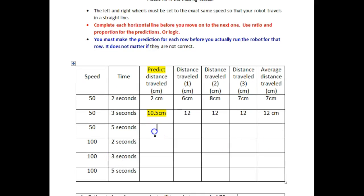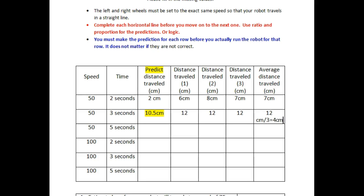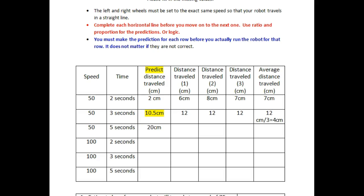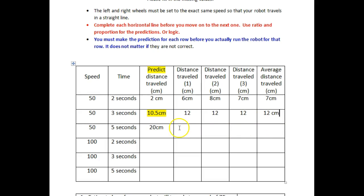Now we have to fill in this box. If we travelled 12 centimeters in 3 seconds, how far did you travel in 1? Well, 12 centimeters divided by 3 is 4 centimeters. So we are going to estimate that it's going to be 4 centimeters times 5 seconds equals 20 centimeters — we think it's going to move 20 centimeters. You don't have to put the math in, you can just put the numbers in. Then you're going to measure and you're going to get a figure.